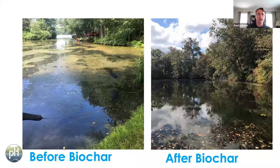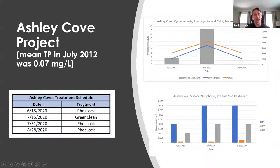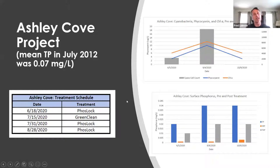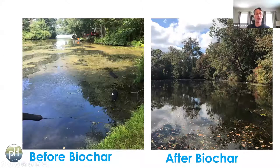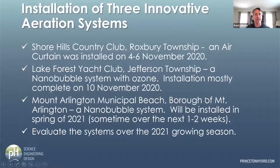In Ashley Cove we did a Green Clean treatment and also used Phoslock. Before any projects in Ashley Cove, the average phosphorus concentration was 0.07 milligrams per liter. Last year we got it down to 0.04, so we're close to that 0.03 target. We definitely had improvement in terms of water quality and just the way the cove looked after we started implementing those restoration techniques.